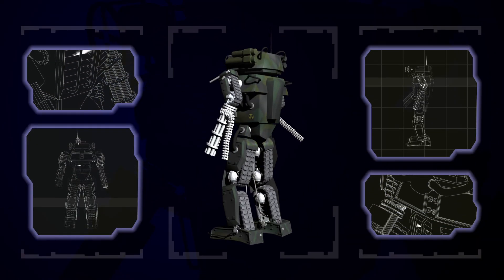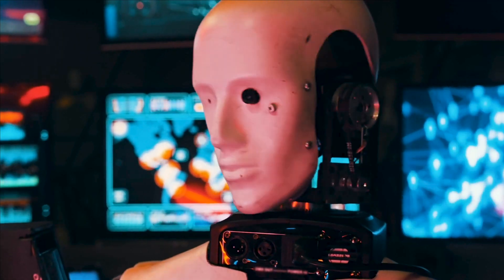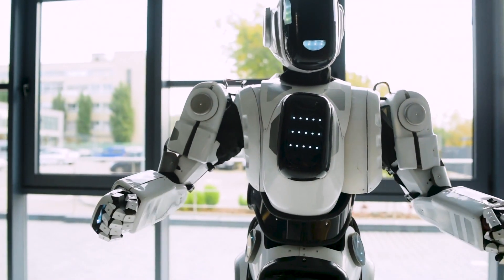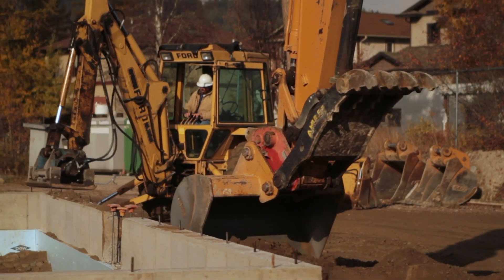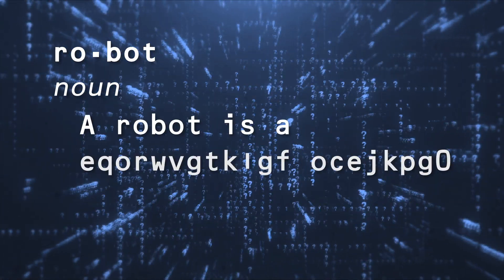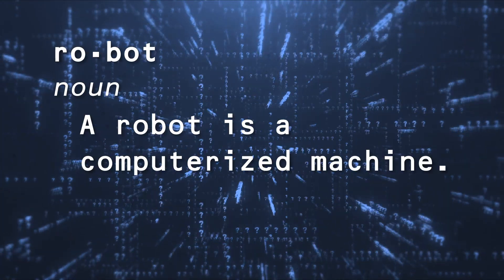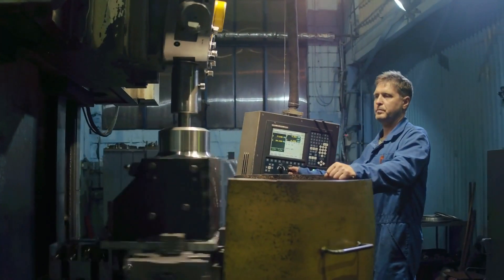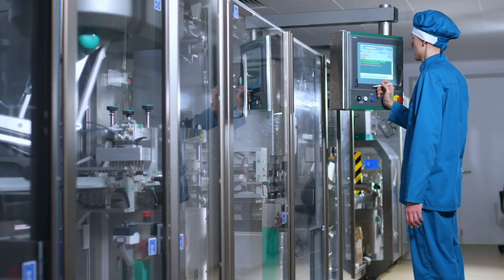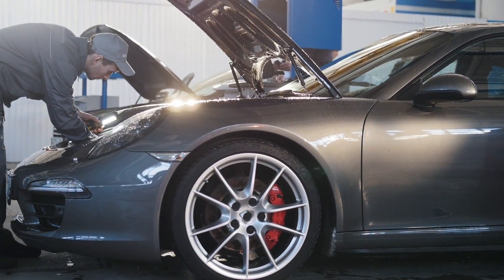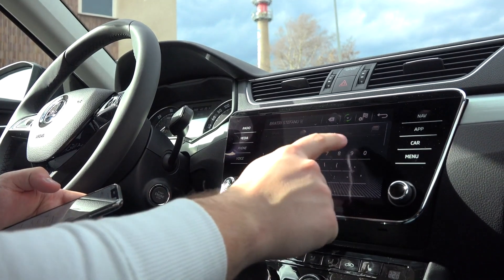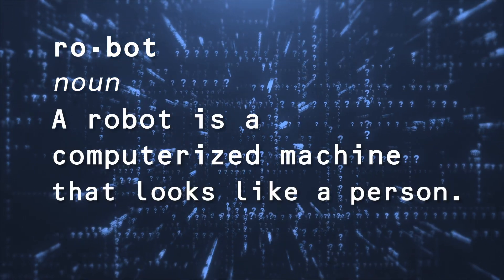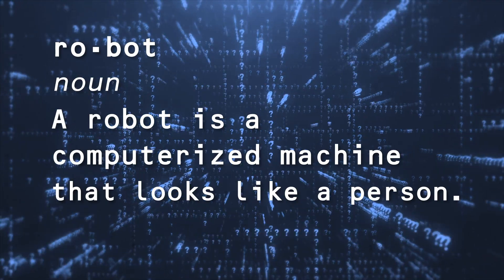What is a robot? What does it do? What's the definition of a robot? Most of us know one when we see one, but what makes it different from other machines? We can start with this sentence: a robot is a computerized machine. That definition can be quite broad, and most people would not consider their car or their microwave to be a robot, yet both of those are machines with computers. How about: a robot is a computerized machine that looks like a person?